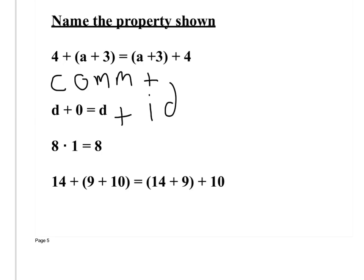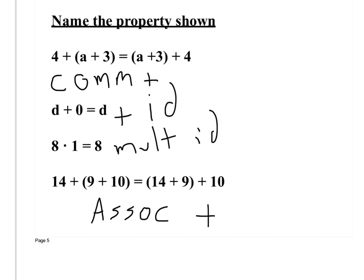For the last one — associative property. Why? Because the grouping is being changed. We are changing the associations of the numbers, so it is associative property of addition.